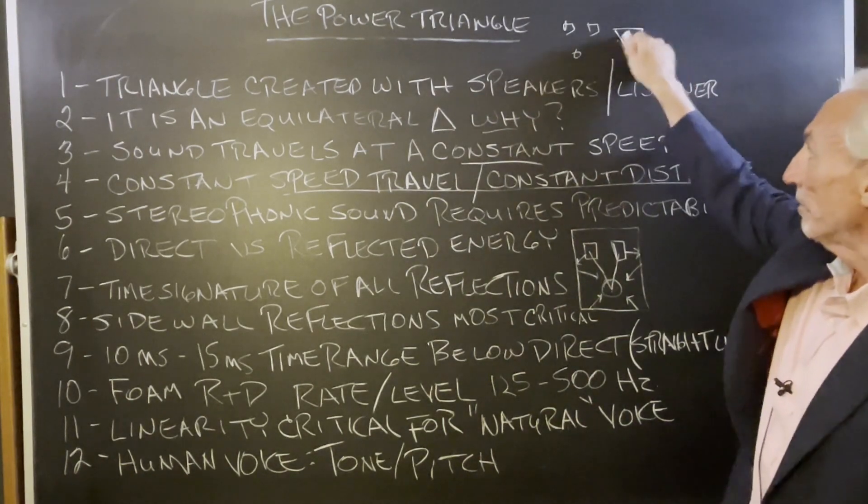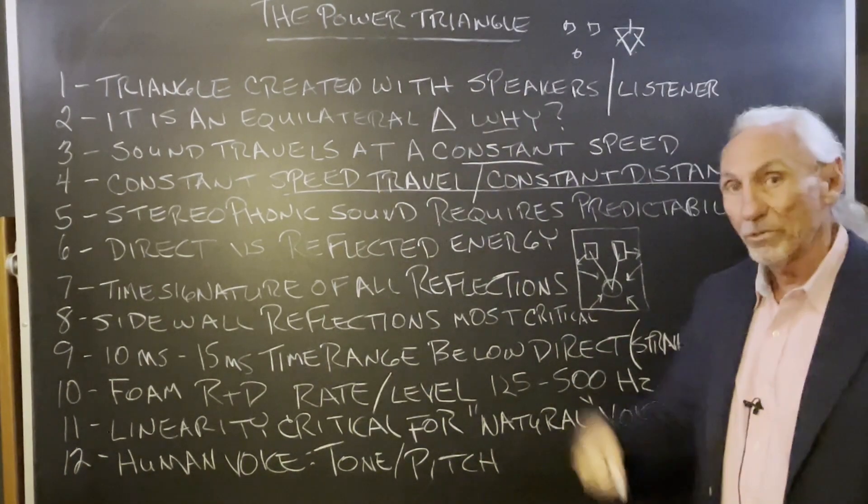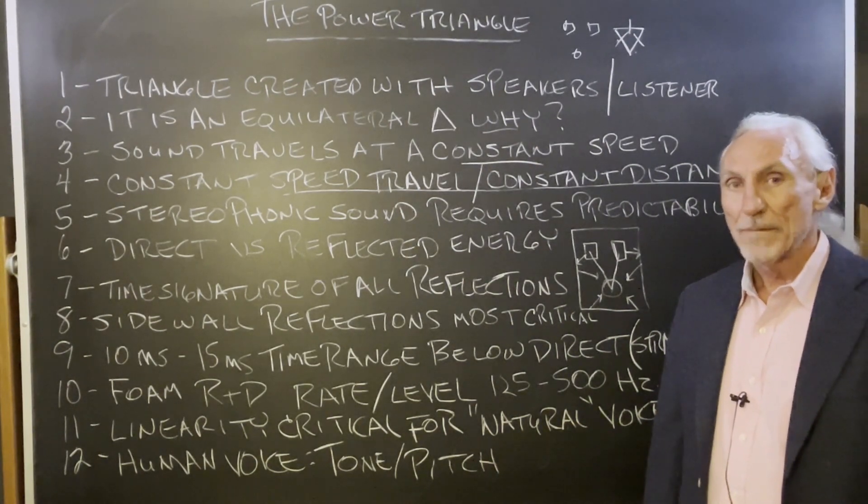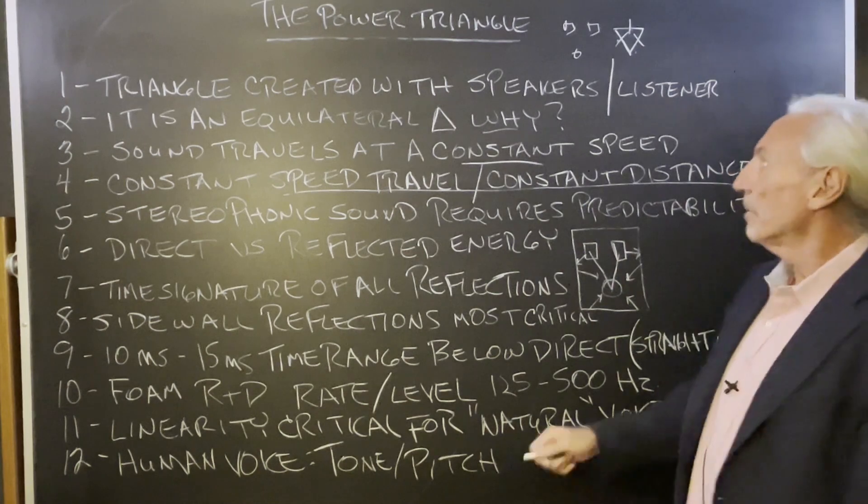So we have constant speed travel and constant distance. When we're dealing with an equilateral triangle, all sides are equal. So the distance between all of those points, indexes - is that what the points are called? I can't remember.